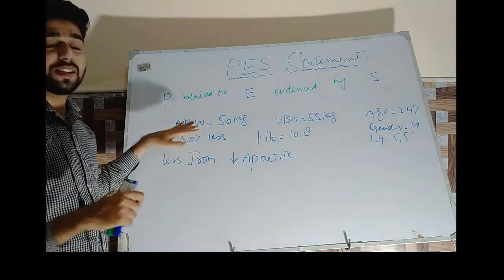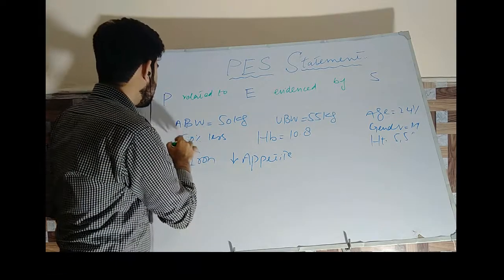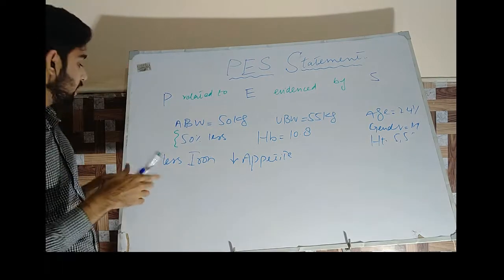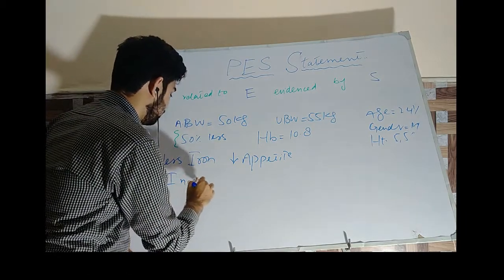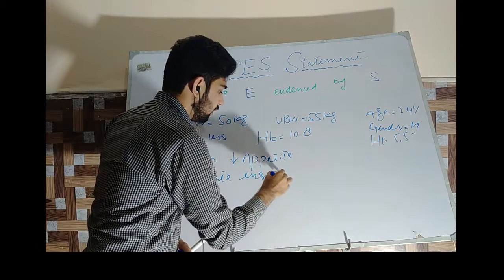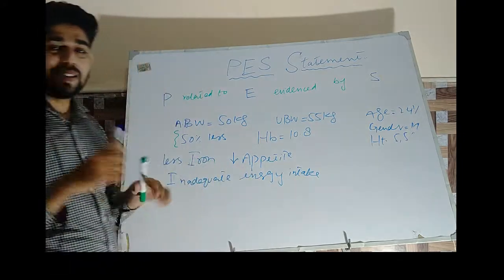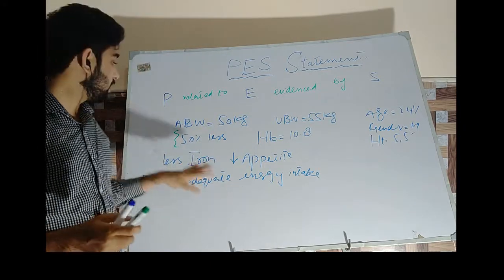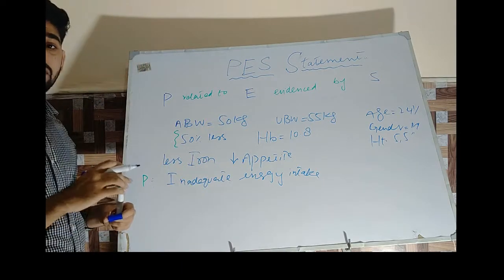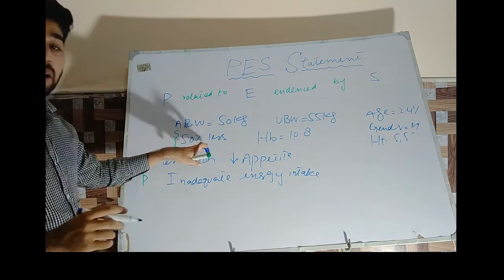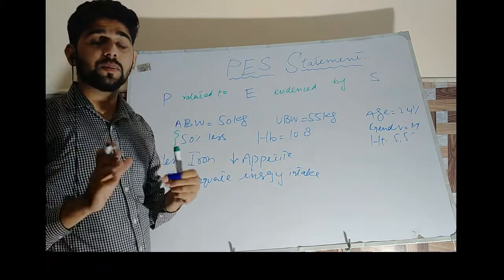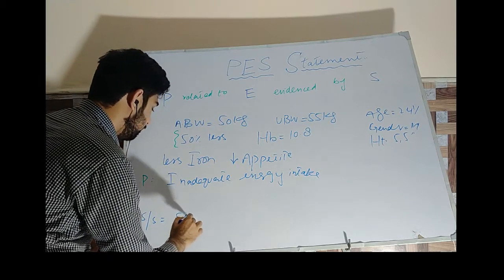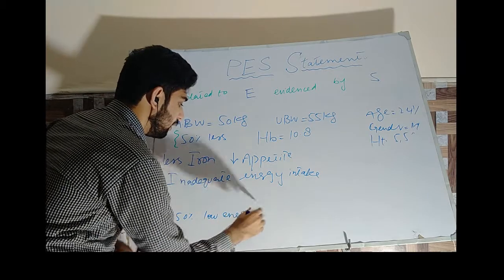First we have to find the problem. What is the problem? Here we can see that the person is taking less energy than the recommendation. So the first problem we can identify is that the person is taking less energy — that is, inadequate energy intake. Now, at the second step, we have to find the signs and symptoms — how we came to know that this problem exists. What is the sign/symptom in this condition? The person is taking 50% less energy than the recommendation, and from the dietary assessment we came to know that. That is the final symptom — the person is taking 50% less energy than the recommendation.